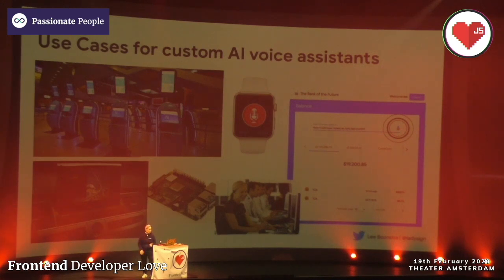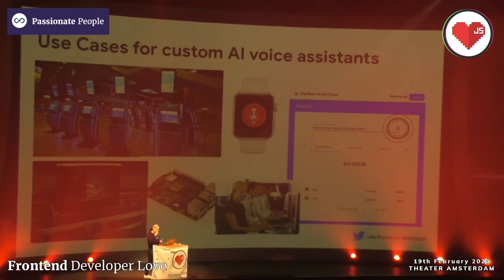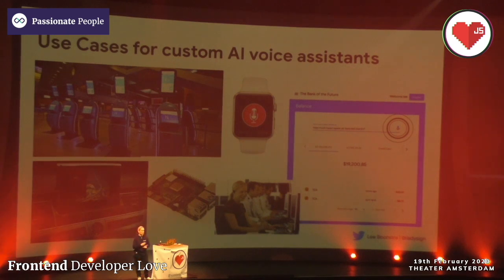We can integrate voice AIs in car navigation systems, or maybe you have your own hardware and want to build an AI on top of a Raspberry Pi. When you think about contact centers, robots that pick up the phone — that's a similar idea. It's also integrating your own custom AI, running an AI on a smartwatch, or on iOS where Siri doesn't have a third-party app system. And last, integrating voice in a website so you can navigate through a website by spoken voice.